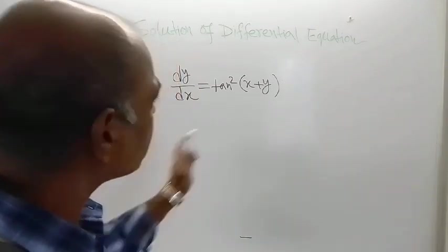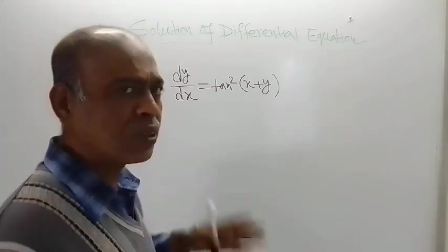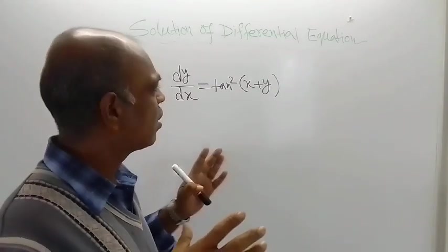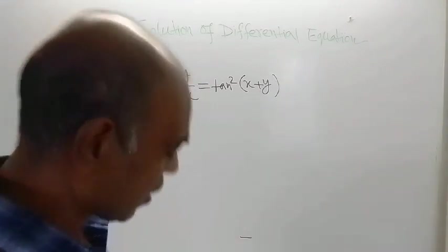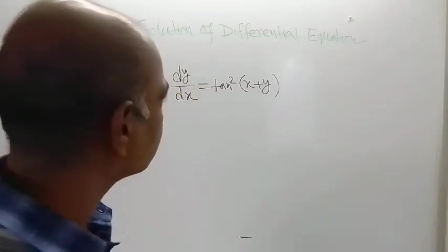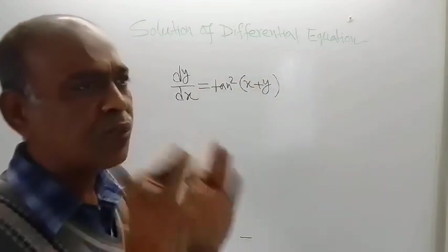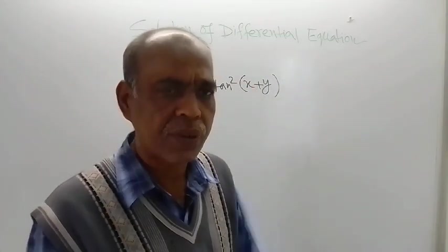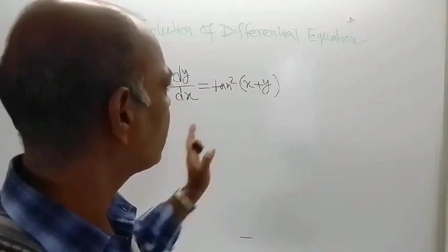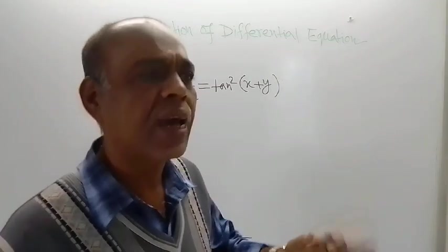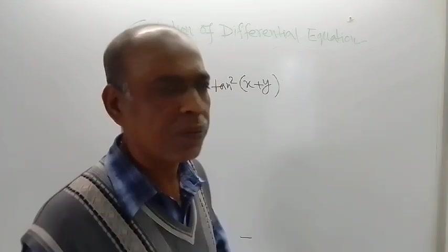So to separate these variables x and y, what we need to do is make a proper substitution. For the given problem, the proper substitution is to assume that x plus y is equal to another variable z. Then the given variables can be separated and you can integrate to solve the given problem.